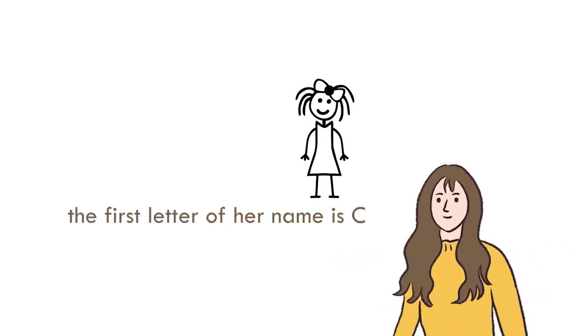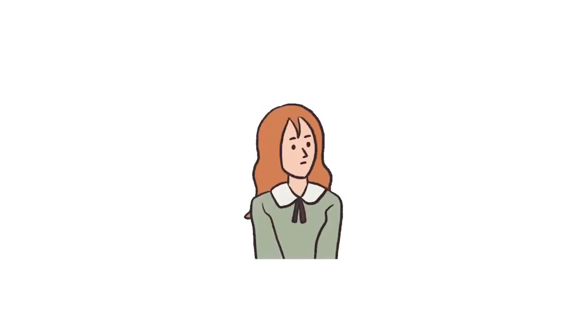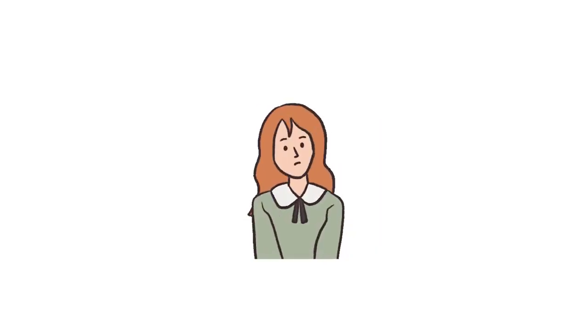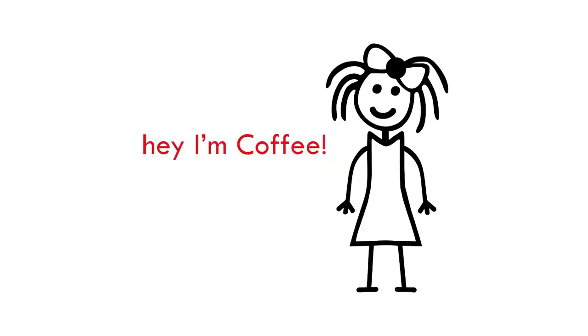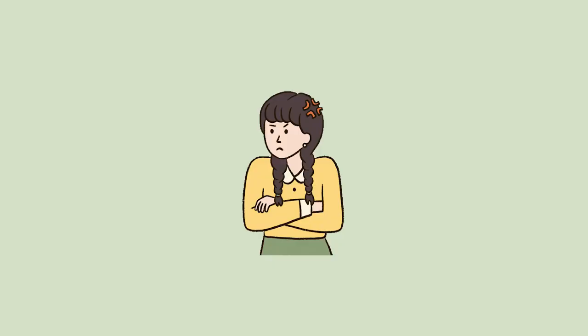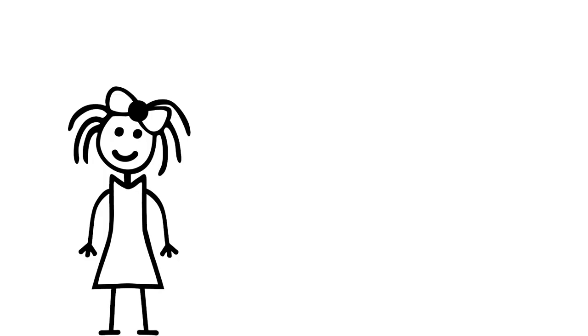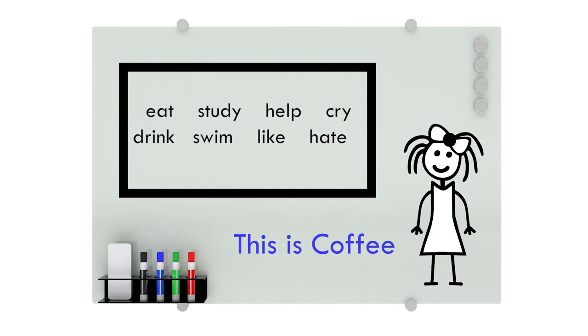Her name starts with the letter C. Students are like: 'Cindy?' No. 'Sandra?' No. 'Ciara?' No. 'Kat?' No. 'You give up?' Yeah. Her name is Coffee! 'What? Miss, no — no one is called Coffee.' And I'm like, 'That's not true. That's offensive. I'd like you to meet Miss Coffee.' And then I draw her on the board. After I do this, I feel students get more excited to see what's next.